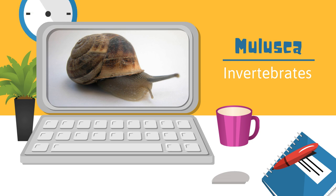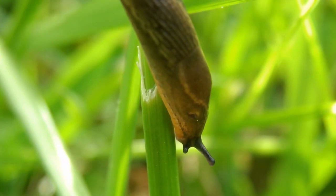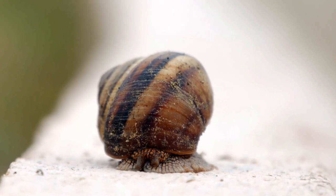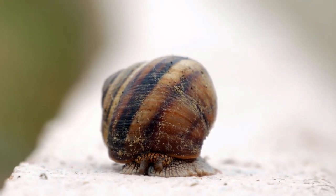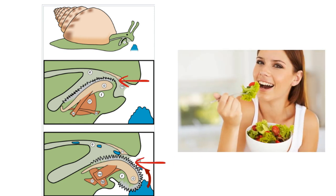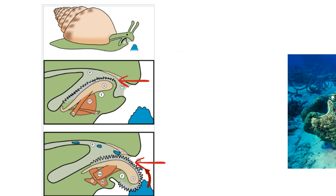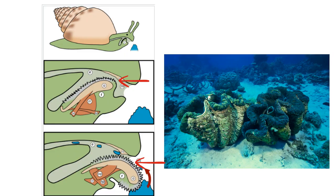Almost all molluscs have these common traits: a soft body and bilateral symmetry, and an internal or external shell. A toothed tongue called a radula — the radula is used by molluscs for feeding and is sometimes compared to a tongue, but it's not exactly like a tongue. This radula is found in every class of molluscs except the bivalves.